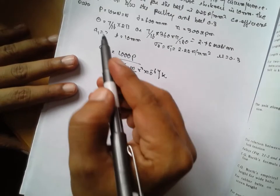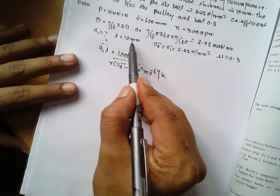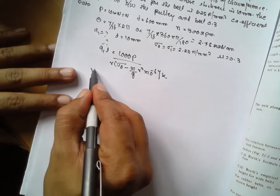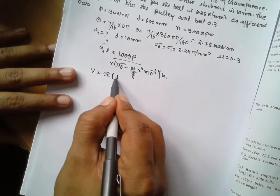P is known, t is known. A we have to find out, this is unknown. We have to find out the velocity. What is the formula? V is equal to pi times d plus t.